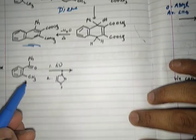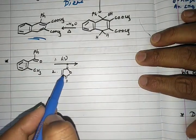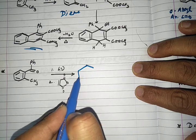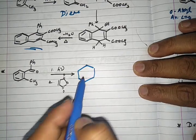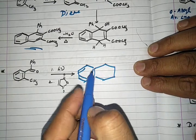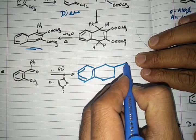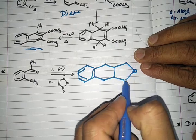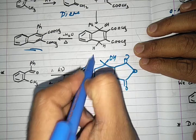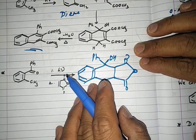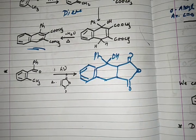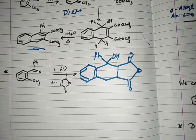Similarly, if maleic anhydride is used, the enol intermediate can also be trapped, providing another good example of trapping the enol formed during photoenolization.